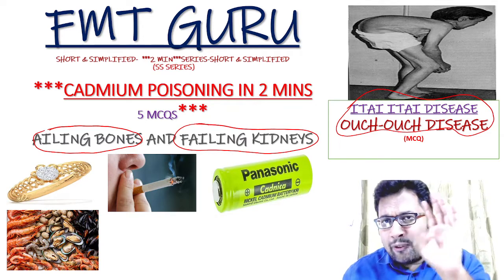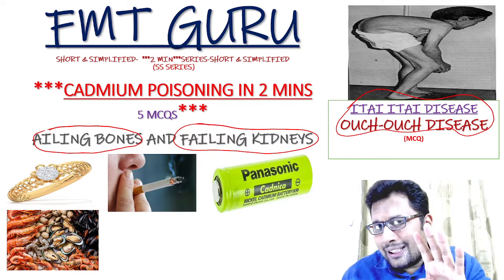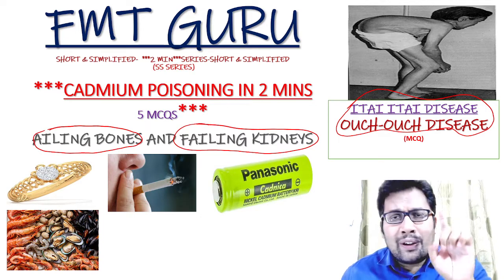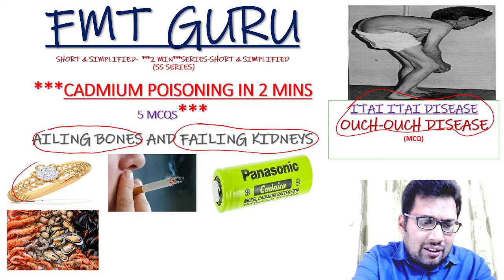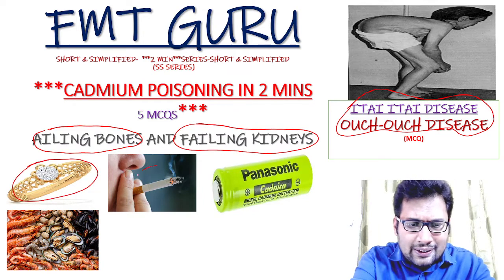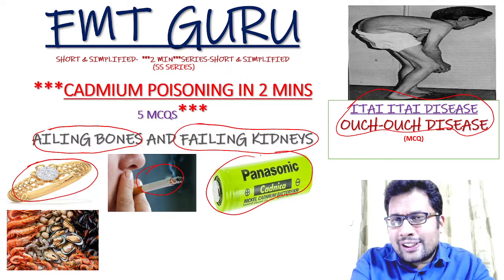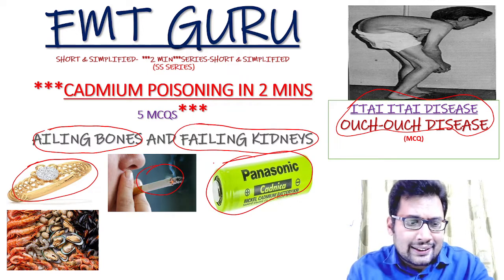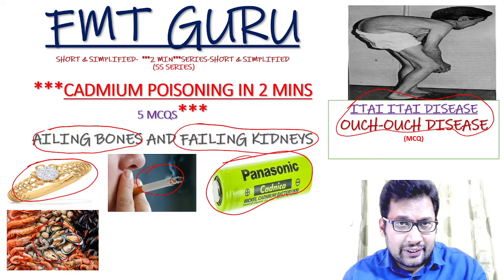What are the 4 common sources? You can see the 4 important images there. The first one is jewelry making. The second one is common in smokers. One more common source is cadmium-containing batteries. And lastly, shellfish.